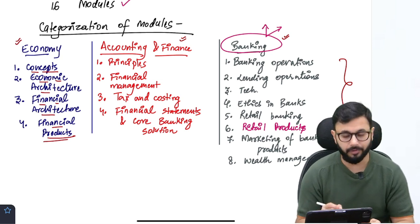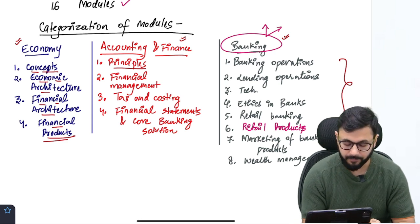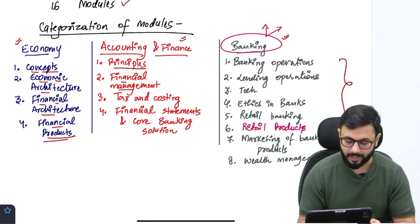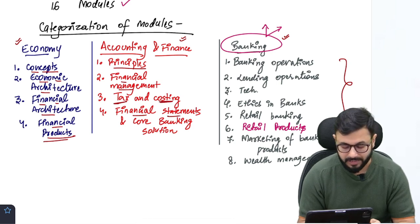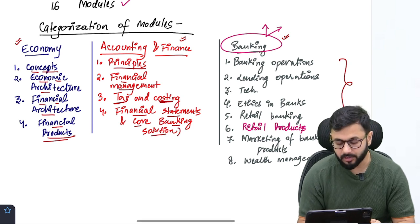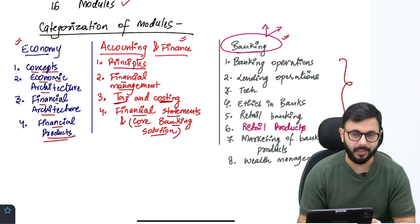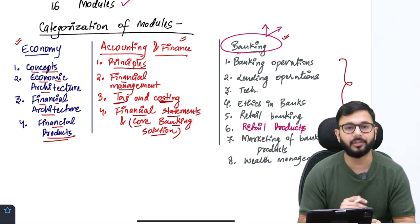In accounting and finance, you will be going through the basics and principles of accounting, the basics of financial management, basics of taxation and costing, basics of financial statements and core banking solution. Core banking solution feels like it should come under banking but it comes under accounting and finance because it is connected with financial statements.